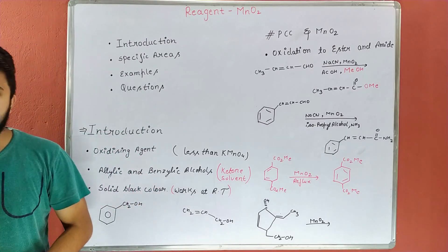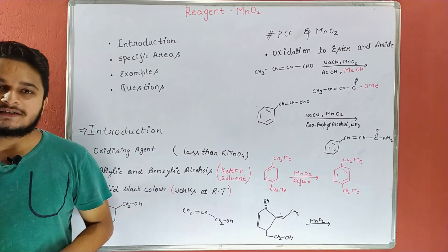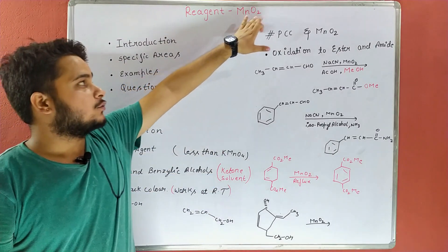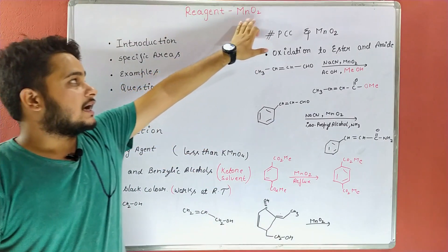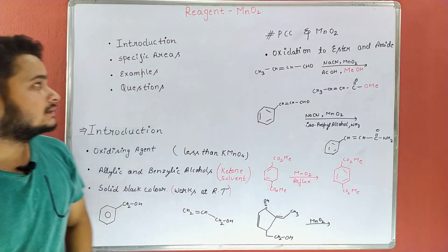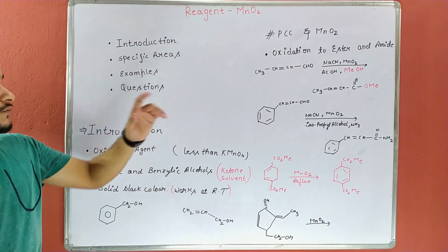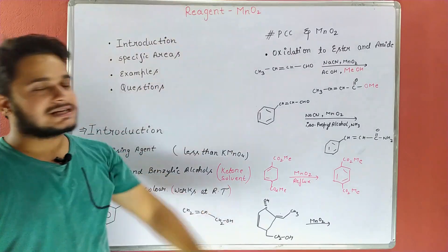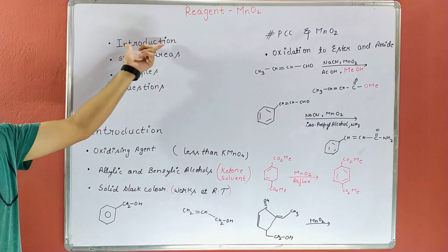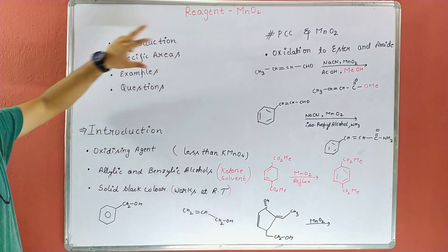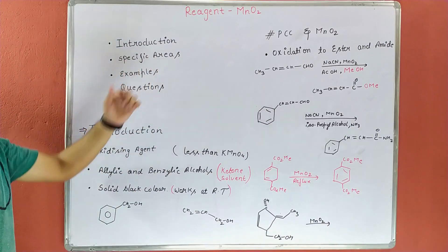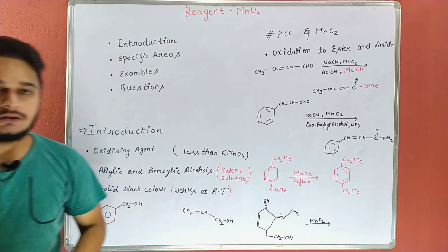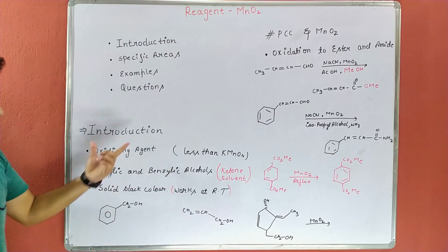Hello friends, welcome to Mystery Camp. Today we discuss a very important reagent named MnO2 — Manganese Dioxide. This is basically used for the oxidation of alcohols. In this lecture we discuss the introduction, specific areas of MnO2, some examples, and questions for MnO2.